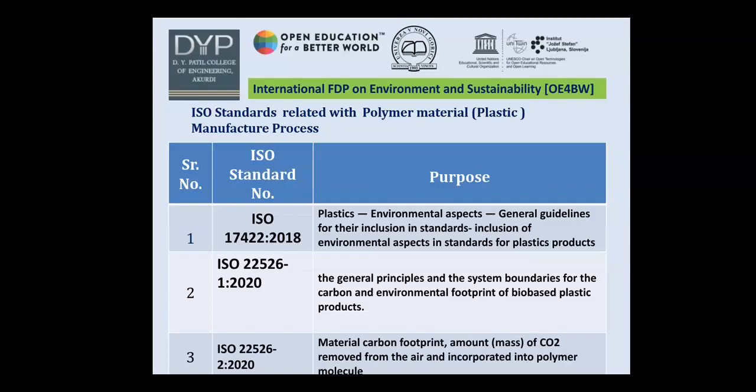There are a number of ISO standards related to polymer material and plastic manufacturing processes. I will discuss three of them. First is ISO 17422:2018. Second is ISO 22526 Part 1, 2020 — covering general principles and system boundaries for carbon and environmental footprints of bio-based plastic products. Third is ISO 22526 Part 2, 2020 — material carbon footprint.